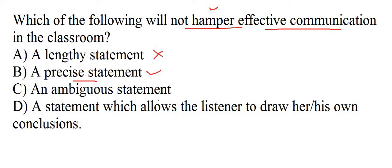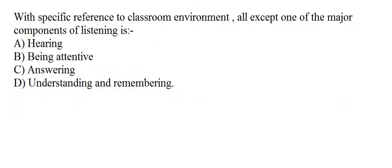An ambiguous statement has many interpretations, which is not proper for effective communication. Option D — a statement which allows the listener to draw their own conclusion — is also problematic because every statement has many views. So if the communication is effective, it should be precise and to the point. Option B is the right answer.